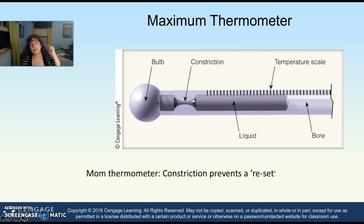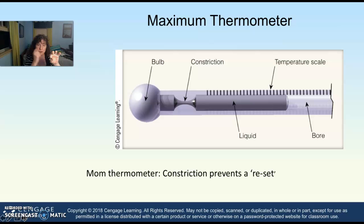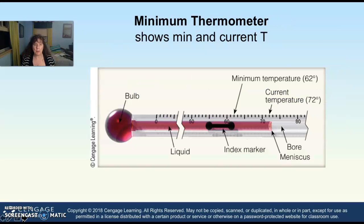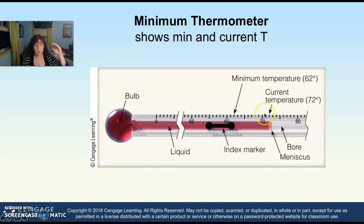Maximum thermometers are the kind your mom would shake down if you had your temperature taken. They have a constriction near the bulb that will not allow the mercury to drain back down once your temperature is taken, so you shake it down to get past that constriction. They are very accurate when read without shaking. Minimum thermometers show the minimum temperature for the day — they lock the temperature with an index mark and send alcohol up beyond that for the current temperature.